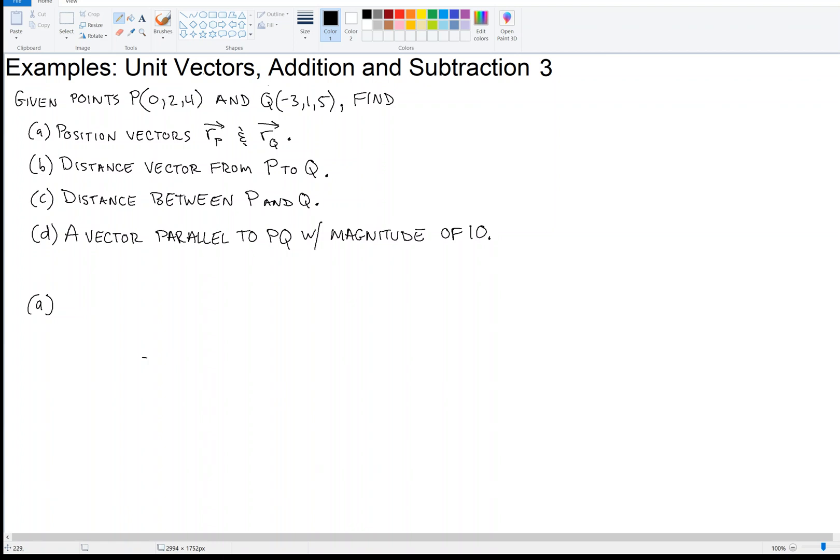then the position vector is very simple. It's 0 in the X direction plus 2 in the Y direction plus 4 in the Z direction.